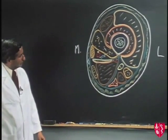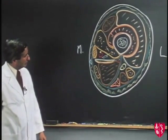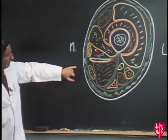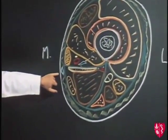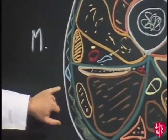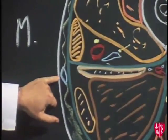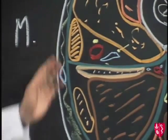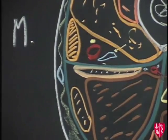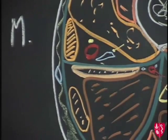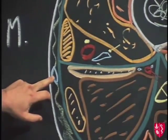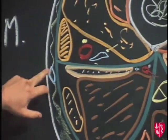Dr. Snell, where was the great saphenous vein? The great saphenous vein is on the medial side of the thigh. It's passed up from behind the knee and is lying in the superficial fascia, passing on up across the thigh to drain into the femoral vein about one and a half inches below and lateral to the pubic tubercle. This is the vein that gives rise to so much trouble and causes varicose veins.